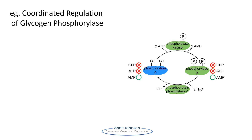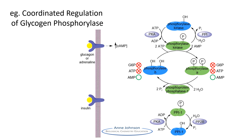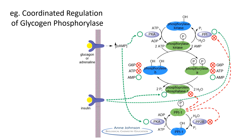Phosphorylase B can be converted back into phosphorylase A by phosphorylase kinase-catalyzed phosphorylation. The activity of both phosphorylase A and B can be modulated by allosteric effectors which will activate or inhibit it. The allosteric effectors bind to separate sites on the enzyme from the substrate and the phosphorylation sites. Phosphorylase kinase and phosphoprotein phosphatase are themselves regulated by phosphorylation and dephosphorylation, ultimately stemming from the effects of the hormones glucagon, adrenaline, and insulin binding to cell surface receptors.